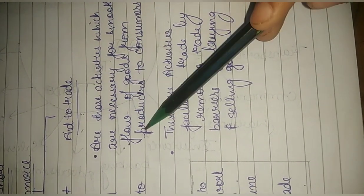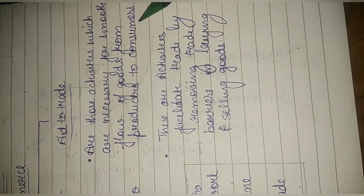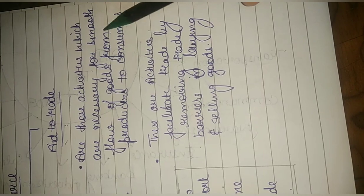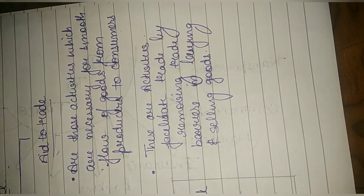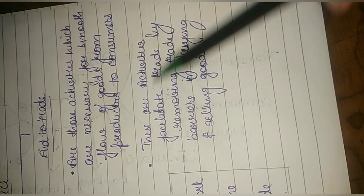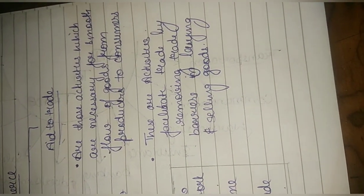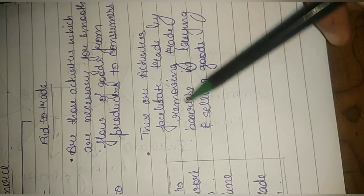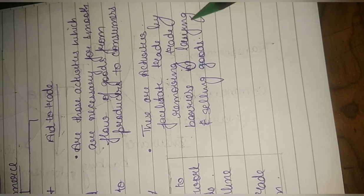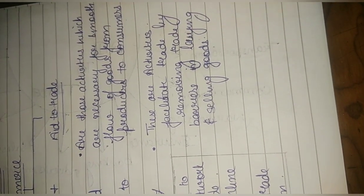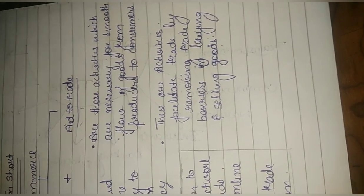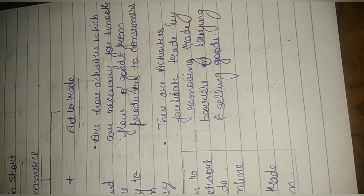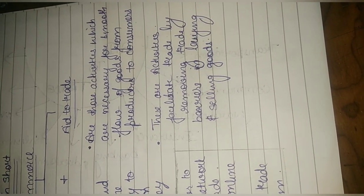Now coming on to aid to trade. Aid to trade are those activities which are necessary for the smooth flow of goods from producers to consumers, meaning there are no restrictions in trade. These are the activities which facilitate — facilitate means easy movement — of trade by removing trade barriers in buying and selling goods. There are some restrictions, and to remove those restrictions or to facilitate trading, we have aid to trade.